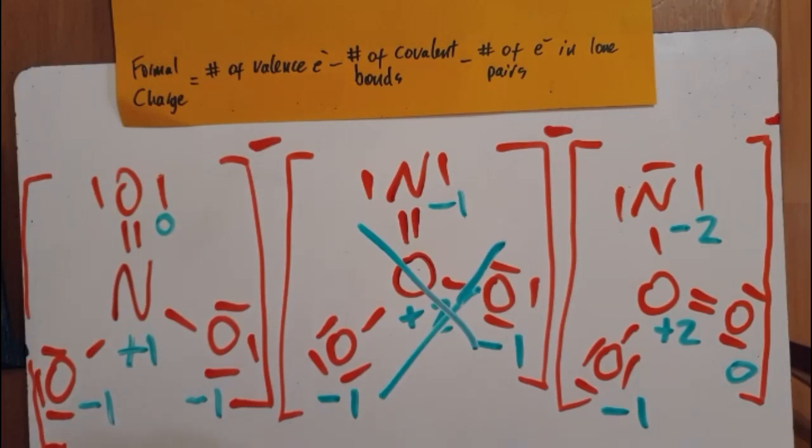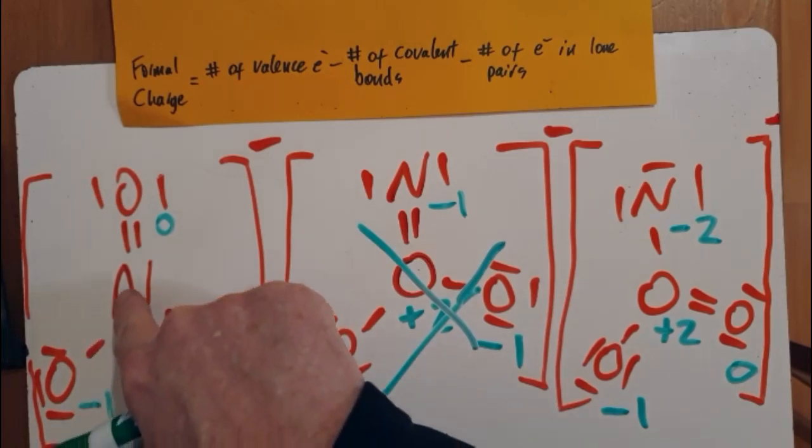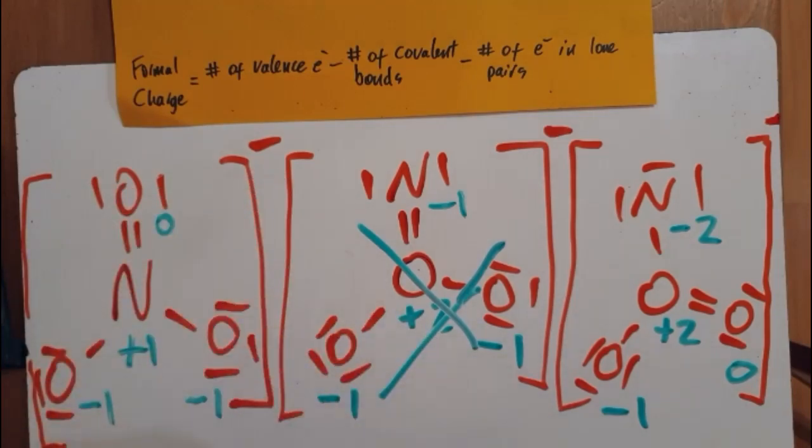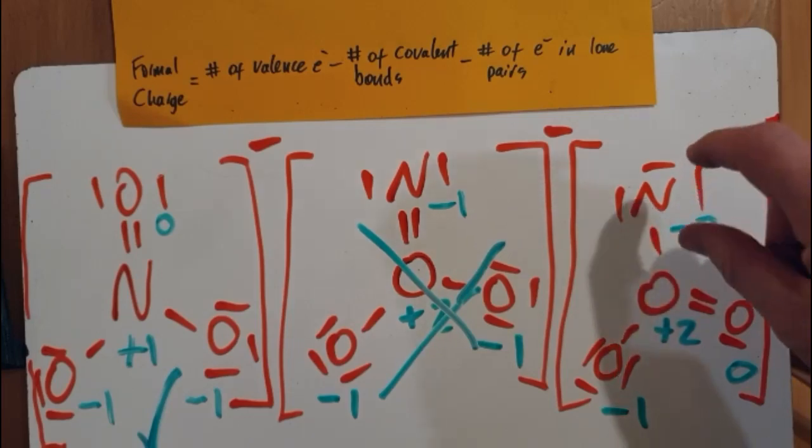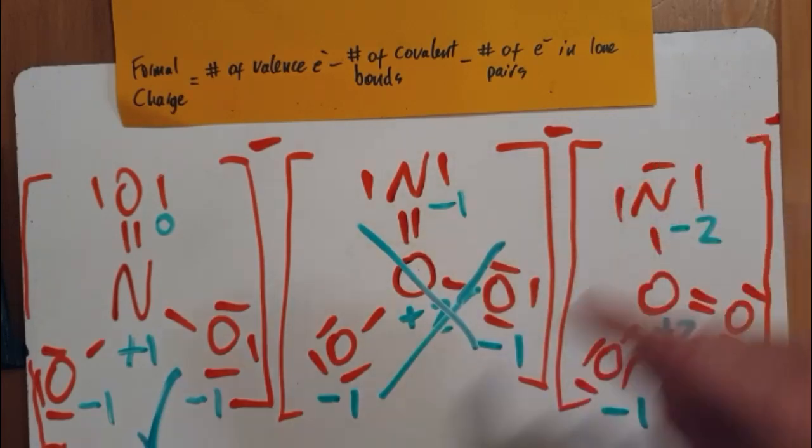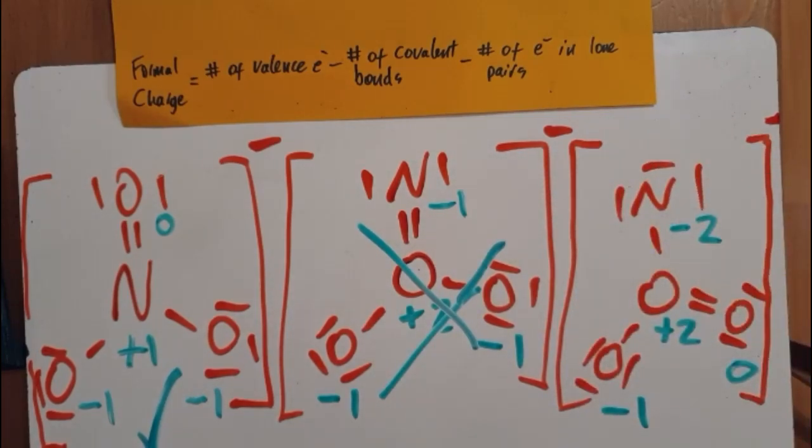The second rule for seeing which Lewis structure is the preferred one is the most electronegative atom has to have the negative numbers. So the most electronegative atom is the oxygen, and so the oxygen should be the negatives. Wow, so it's definitely this one. Yeah, that's the one we've got here, because here the nitrogen is the most negative formal charge, and no, the most electronegative atom has to have the most negative formal charge. And we're done.